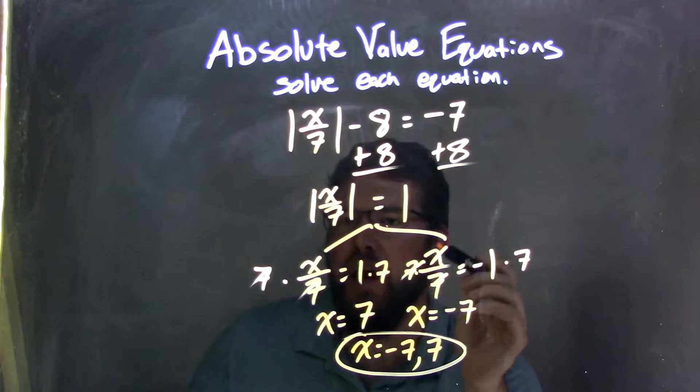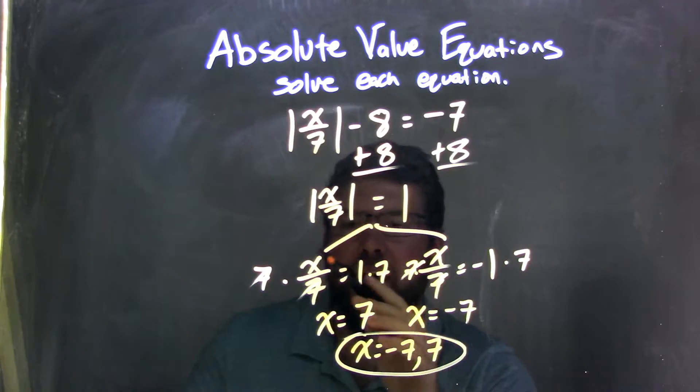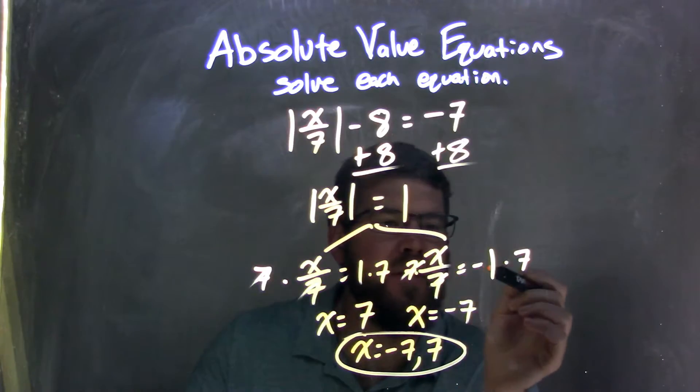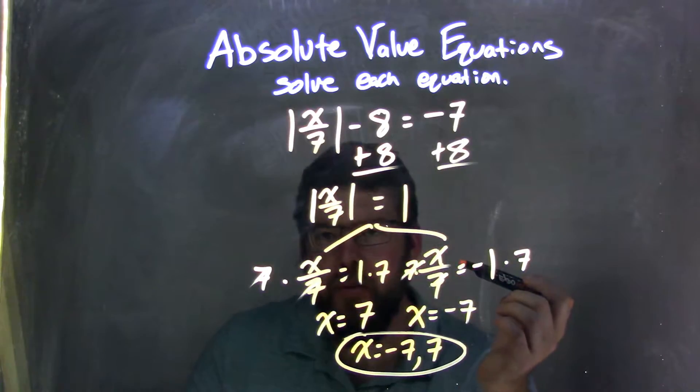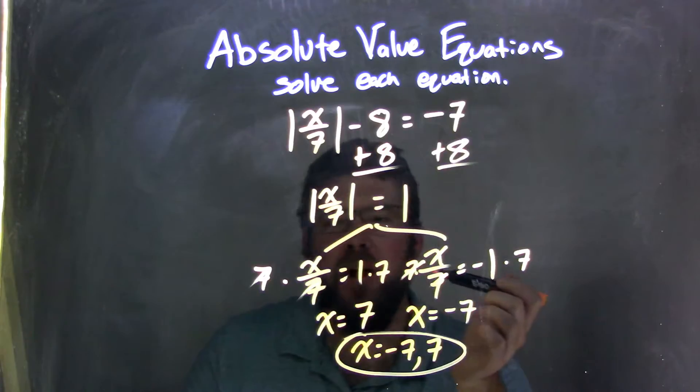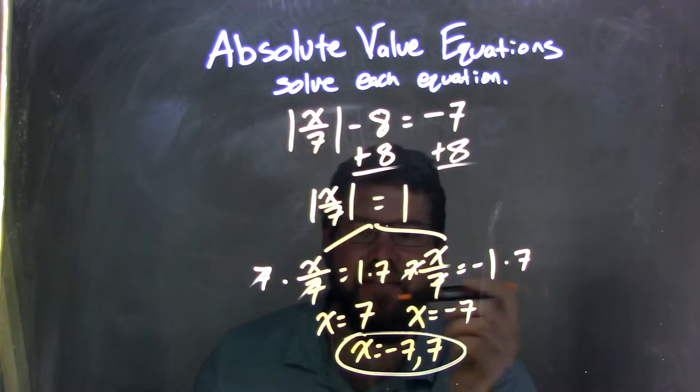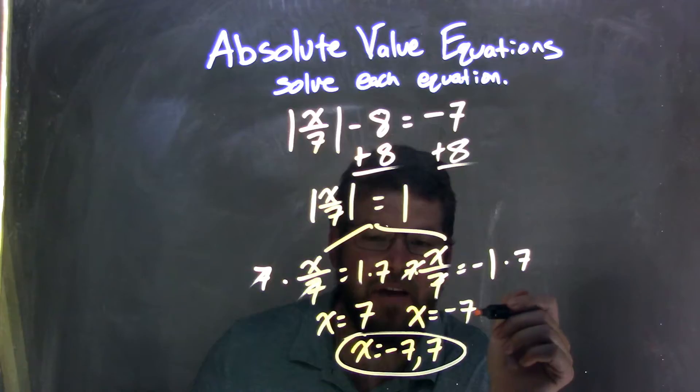From there, I can now break this apart into equations here. x over 7 equals positive 1, and x over 7 equals negative 1. I solved both equations by multiplying by 7 to both sides, leaving me with x equals positive 7 and x equals negative 7.